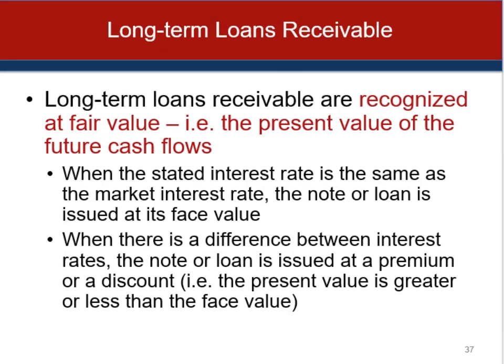For long-term notes or loans receivable, a note is assumed to exist but the difference is the length of time to maturity. Standards for recognition and measurement are the same for loans as for notes. Transaction costs in acquiring loans or notes receivable can be expensed when incurred or added to the fair value of the instrument and amortized over the life of the loan. Both ASPE and IFRS agree that the effective interest method should be used with transaction costs associated with financial assets carried at amortized cost — so you amortize them over the life of the loan agreement.